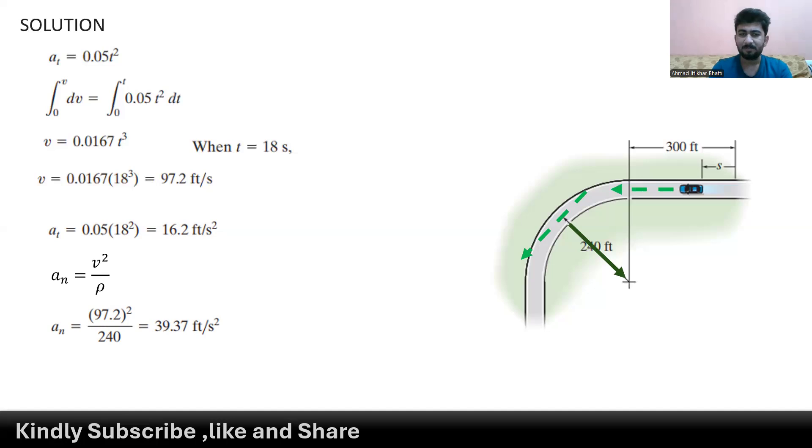Here the radius of the curve is about 240 feet and velocity is about 97.2. Both values are given in feet, so simply we divide these two terms to get a normal acceleration that is 39.37 feet per second squared.